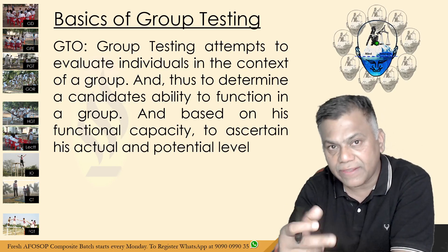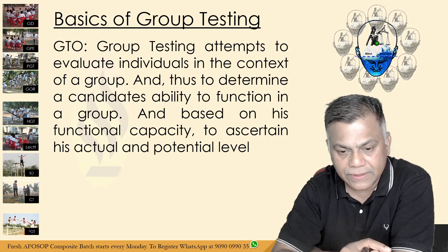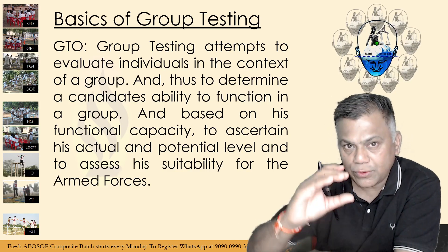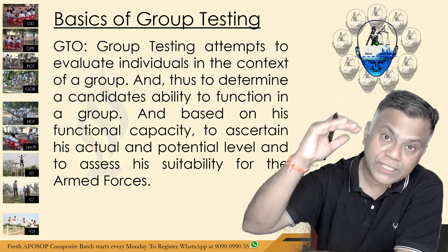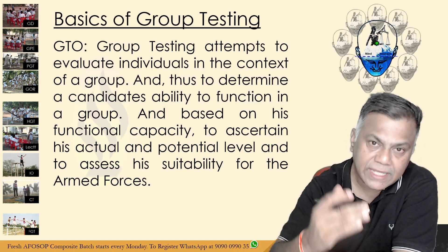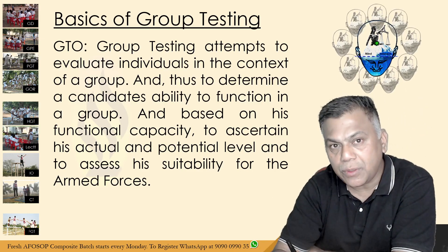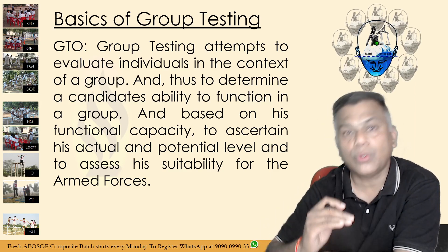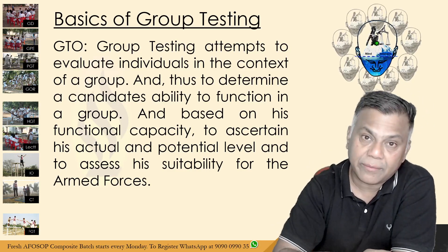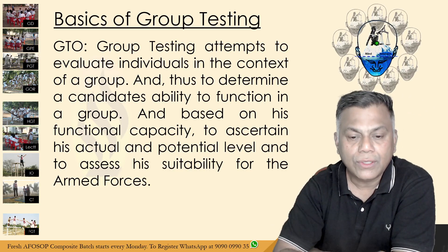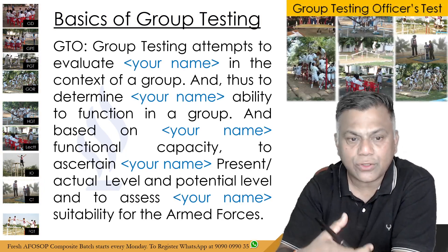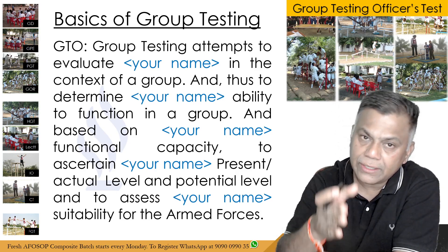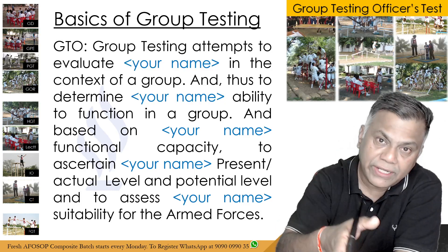The GTO assesses your suitability for the armed forces based on these two levels — your present level and how much potential you have to grow after training. He decides whether you are suitable for the armed forces or not. If you can increase your present level to a higher level, your probability of getting recommended will increase many fold. When you go as an individual you are put into a group, but your selection depends upon your ability to function in the group.